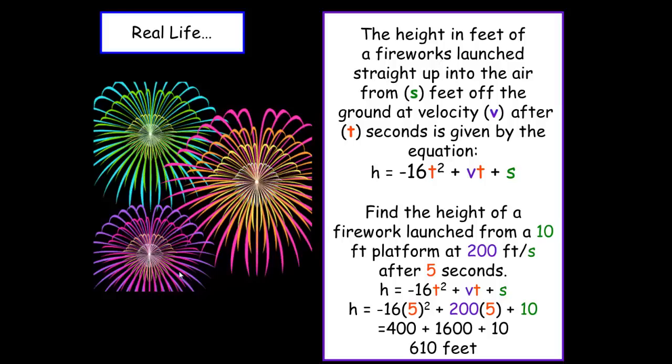The height in feet of fireworks launched straight up into the air from s feet off the ground at velocity v after t seconds is given by the equation h = -16t² + vt + s. To find the height of a firework launched from a 10-foot platform at 200 feet per second after 5 seconds, we substitute 5 for time, 200 for velocity, and 10 for its initial feet off the ground. That means this firework would be 610 feet off the ground in just 5 seconds. That's pretty amazing.